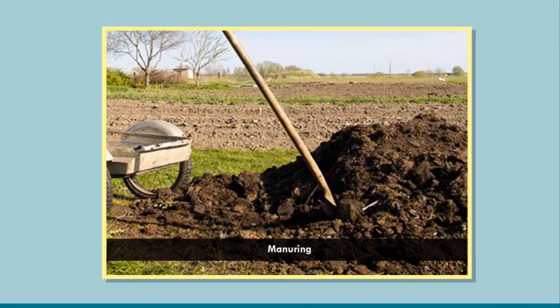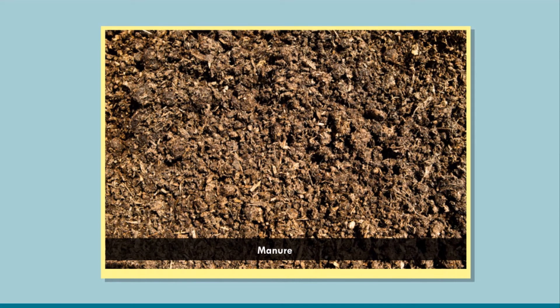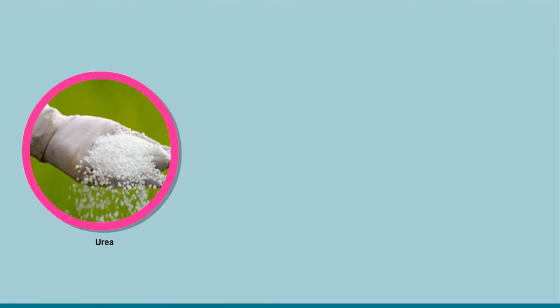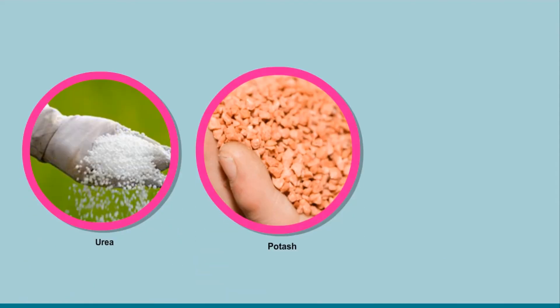Manure is a natural substance obtained from the decomposition of plant and animal waste. Sometimes, manure is not sufficient to provide the required amounts of nutrients. To supply more quantity of a particular nutrient, fertilizers are used. Fertilizers are chemical substances which are rich in a few nutrients. Some common fertilizers are urea, potash, and phosphate.